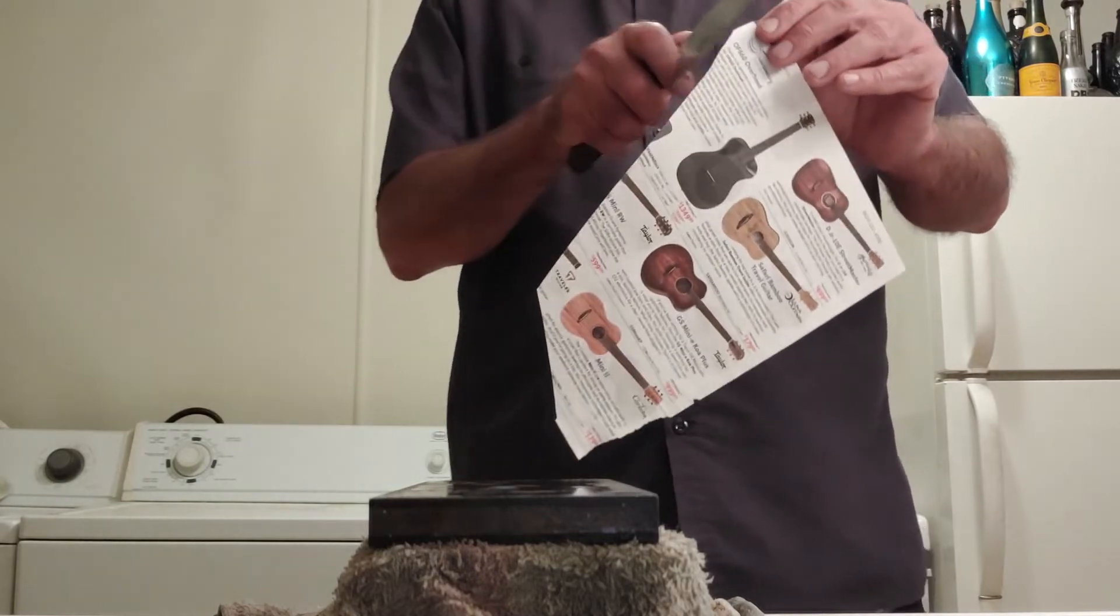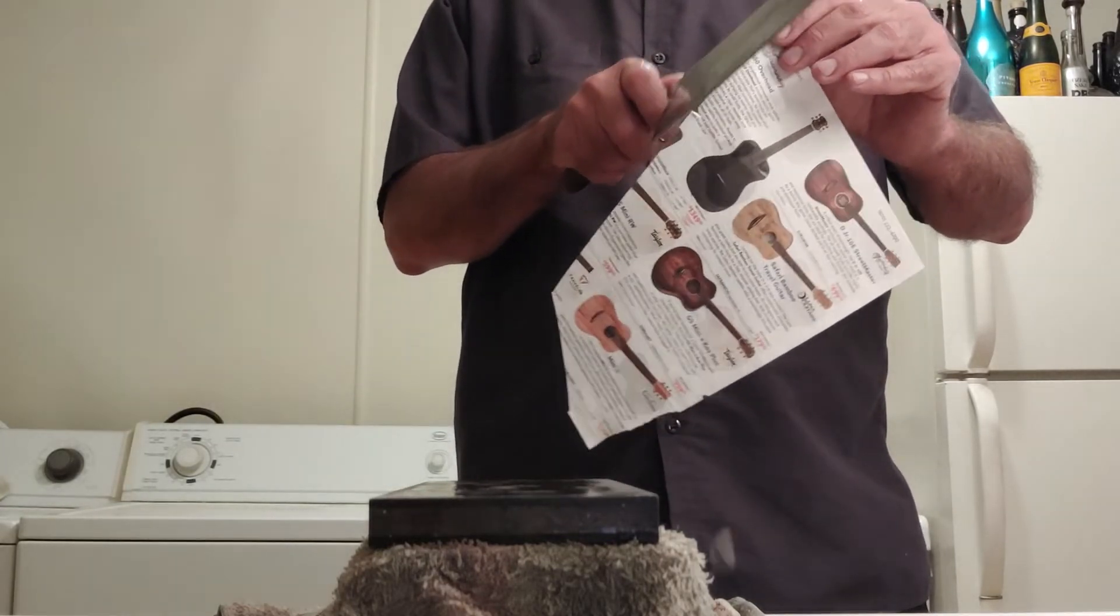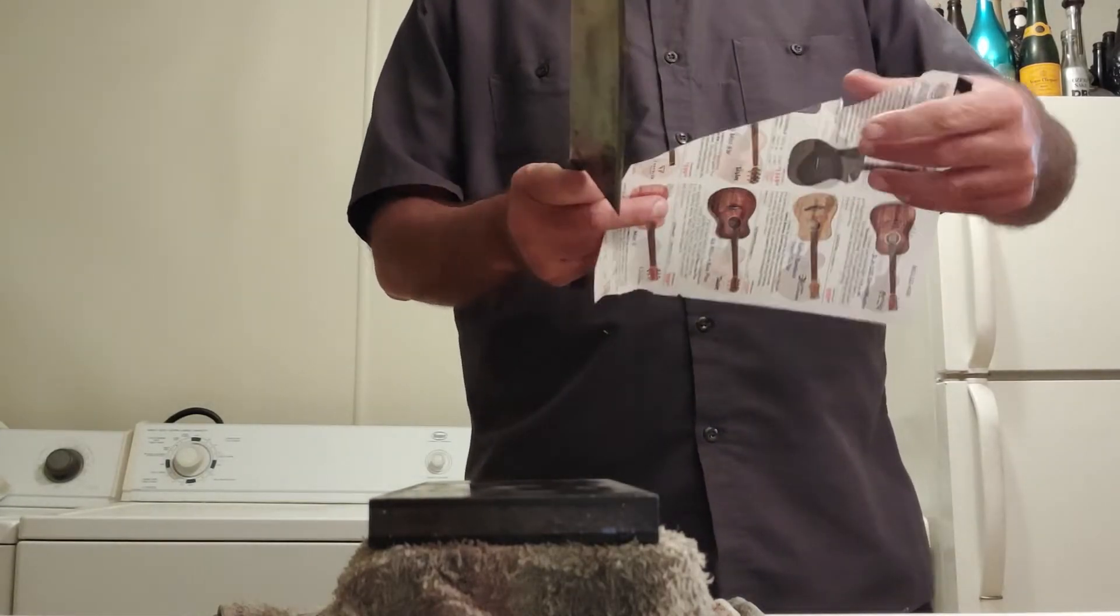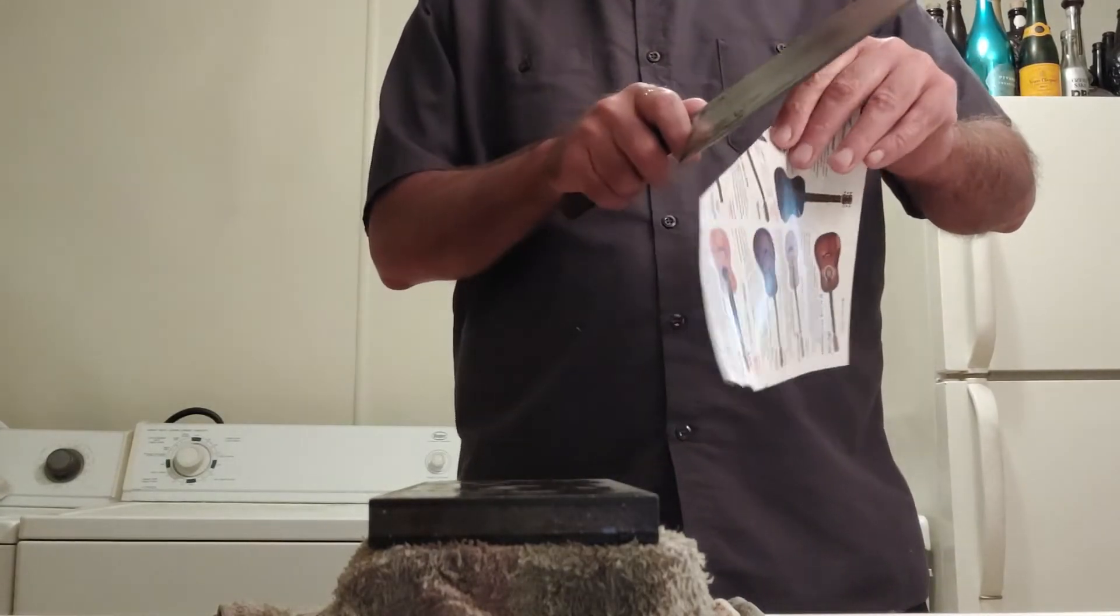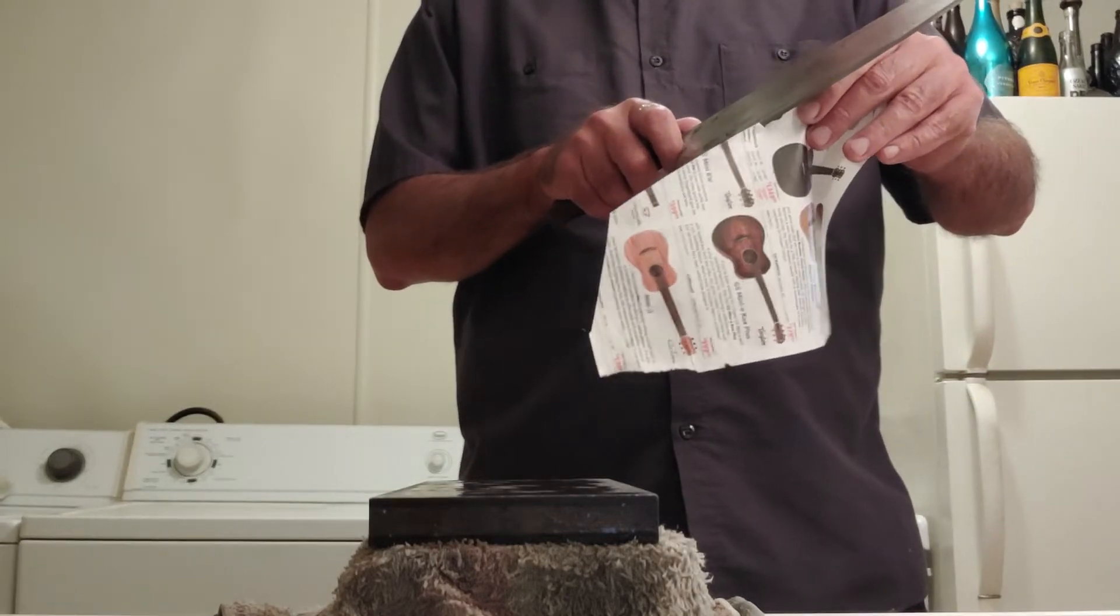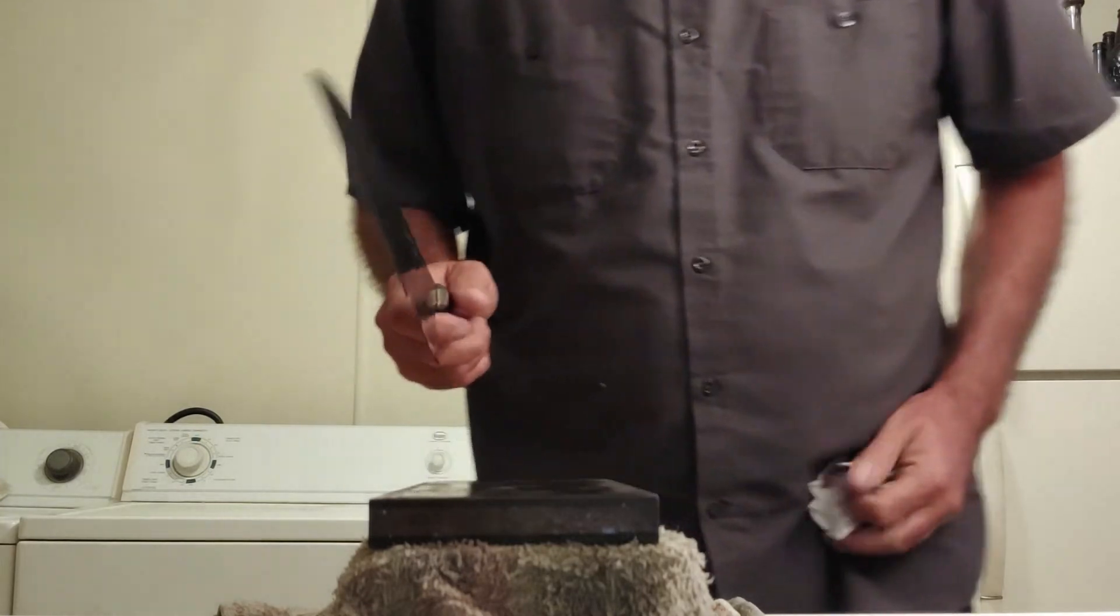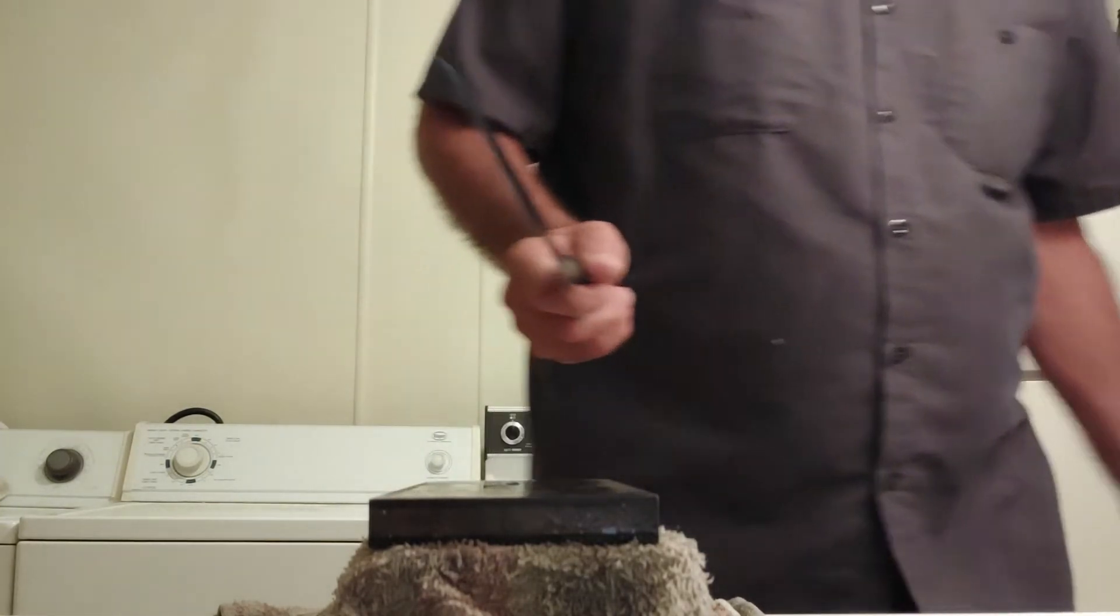But when I try to push cut across the grain, you see that? It's starting to catch. So the edge, the very edge of the edge is just getting, in the part of the blade that I use the most, is starting to degrade just a little bit. And this Aogami Super Steel is very tough. The edge retention is excellent.